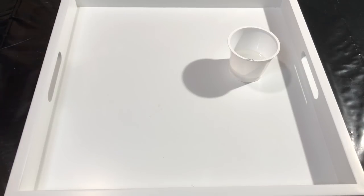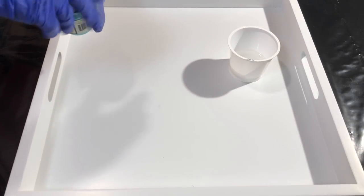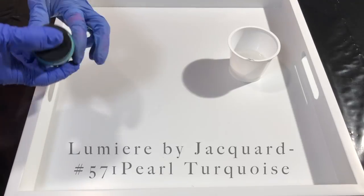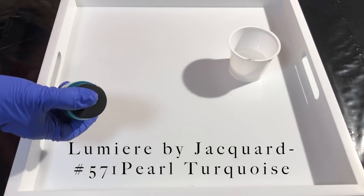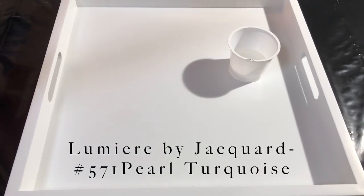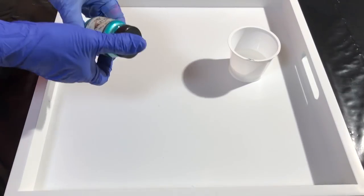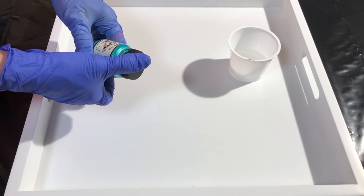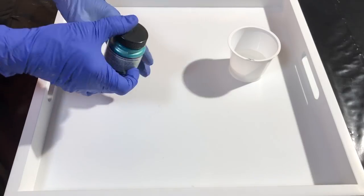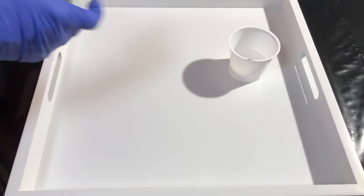Now, one of the other colors I'm going to use. This is actually, I should shake it. This is by Jacquard. It's a Lumiere. And this is a fabric paint. So, it's an acrylic fabric paint. Light body metallic acrylic. And this one's called Pearl Turquoise. And I want this one to be very transparent as well. It's going to be an accent color.